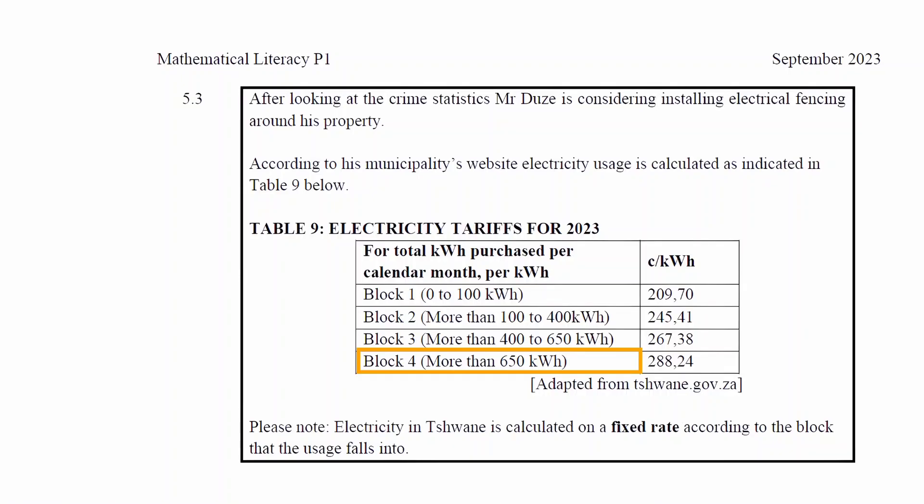The next step is to calculate the cost of 900 kilowatt hours of electricity. 900 kilowatt hours of electricity falls into block 4. This means that the rate equals 288.24 cents per kilowatt hour of electricity used.